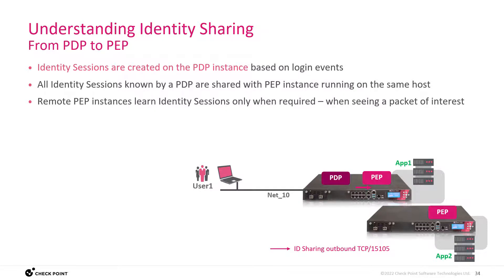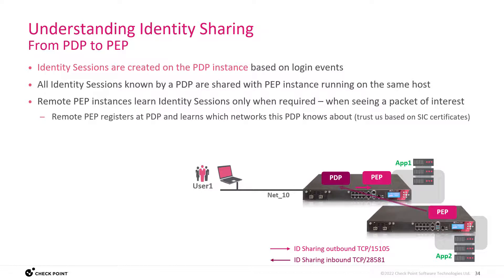The remote host, however, is only getting identity sessions when needed — when a packet of interest is arriving on that particular gateway. Keep in mind there are identity sharing connections based on two directions: one is outbound towards the PDP policy enforcement point, and one is inbound from a remote PEP to the PDP. The trust of this connection is based on SIC certificates because they are both managed on the same management server.